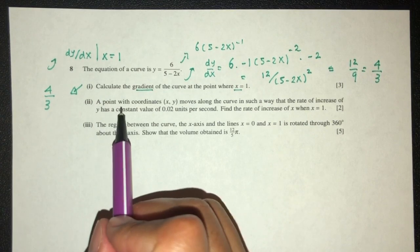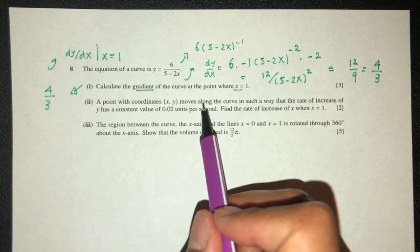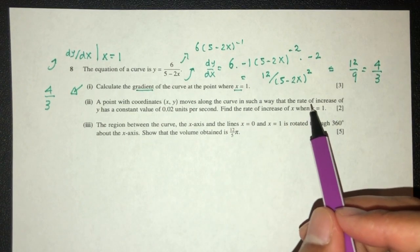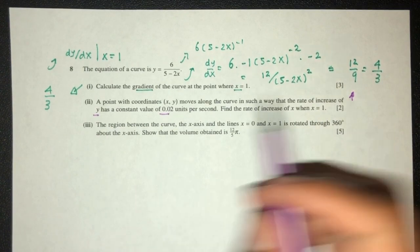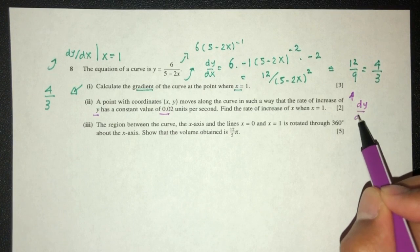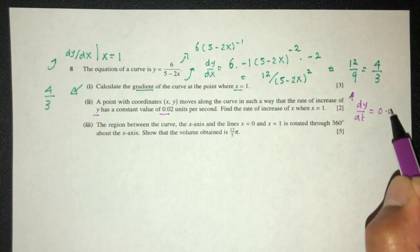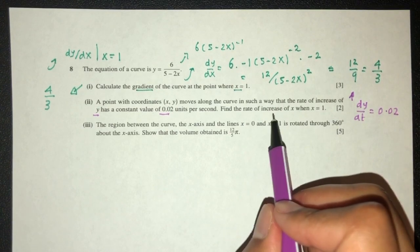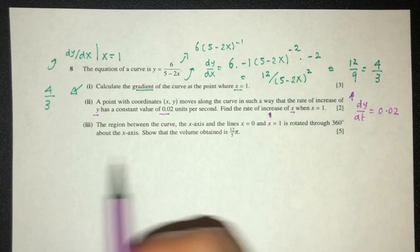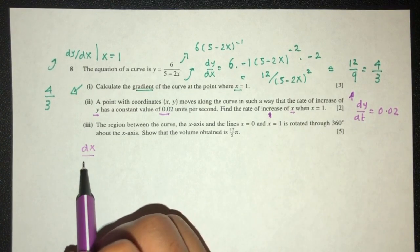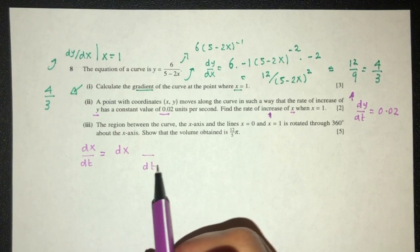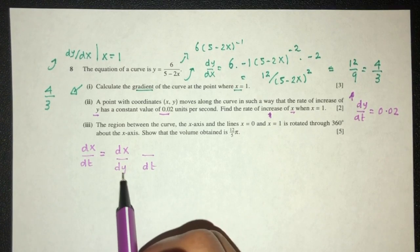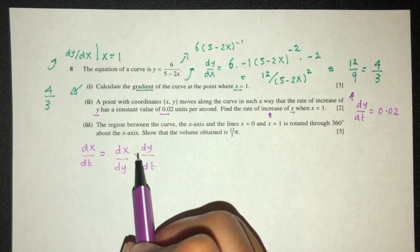Now part two. A point with coordinates (x,y) moves along the curve in such a way that the rate of increase of y is this. So dy/dt equals 0.02. Find the rate of increase of x. So we have to find dx/dt. We have dx on top, dt at the bottom, and they both have to be related by something, which is dy in this case.